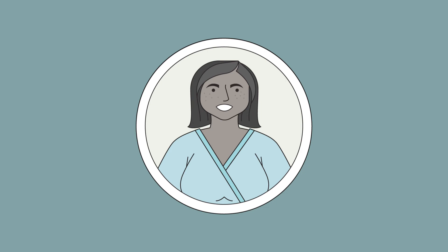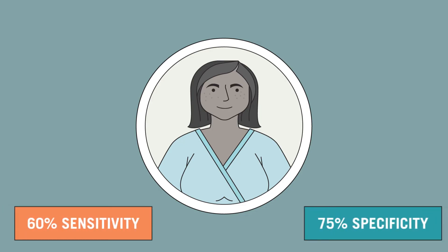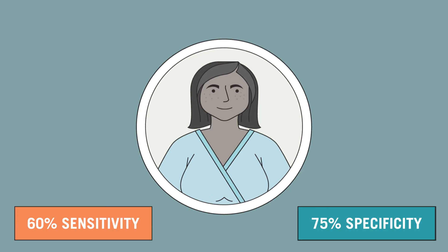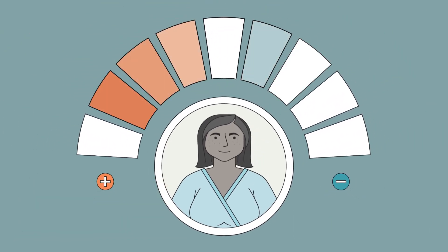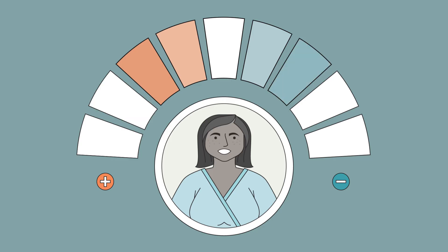Let's return to our patient, Ms. Mendez, from the pre-test probability video, being considered for a heart attack. An exercise stress ECG test is 60% sensitive and 75% specific. Although commonly used, this test doesn't give conclusive information, but makes a disease somewhat more or less likely. This test has to be used carefully, based on her pre-test probability and the pros and cons of testing.